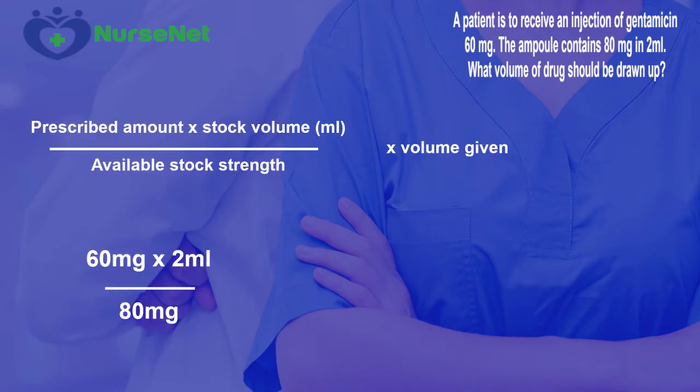We then divide this by the available stock strength — in this instance, 80 mg. So 60 mg multiplied by 2 ml gives us 120, and that's divided by the 80 mg.